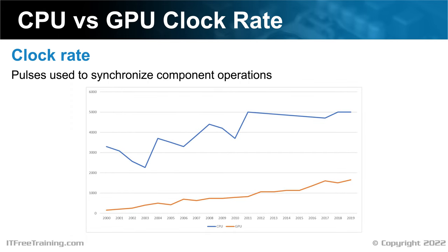This chart looks at the fastest Intel CPU clock rate and NVIDIA GPU clock rates released each year from 2000 to 2019. CPU rates have gone a little up and down, but nowadays stay around the 5 GHz range. There are hard engineering limits in CPU design, which is why to get more performance you see more cores added and other improvements rather than clock rate improvements. For GPUs, by contrast, there has been a slow increase over the same time period.